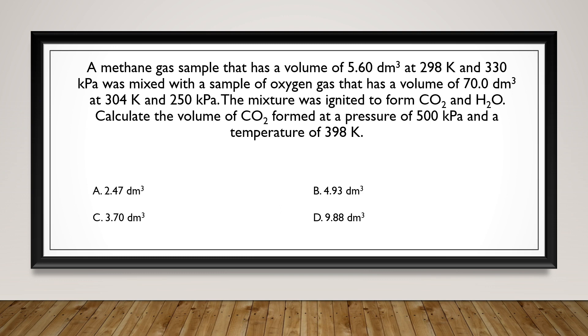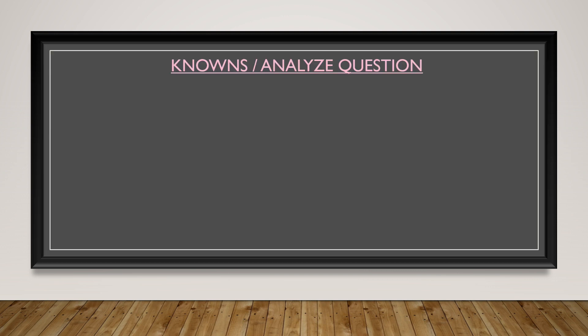All right, let's first break down the question so it's easier to understand. So, we start with methane gas, which is known as CH4. It has a pressure of 330 kilopascals, a volume of 5.60 decimeter cubed, and a temperature of 298 kelvin.